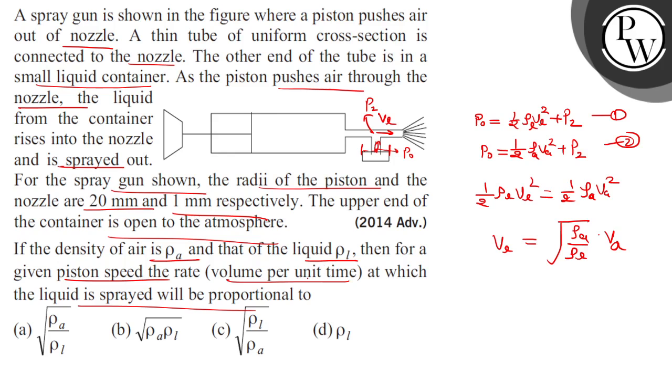volume per unit time. Because we are talking about speed, the area will remain constant, so Q, the volume flow rate, will be directly proportional to v_l, since the area is constant.